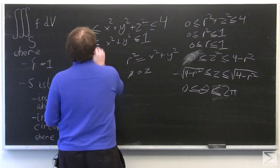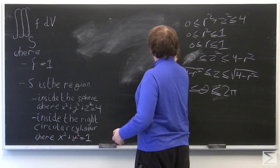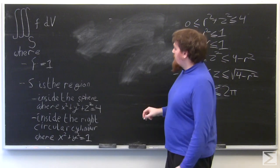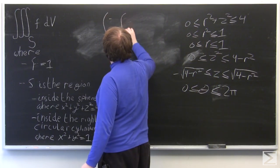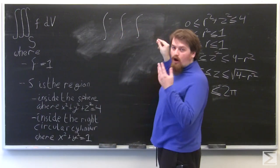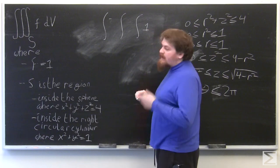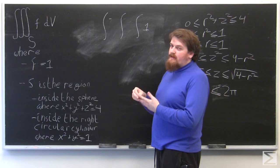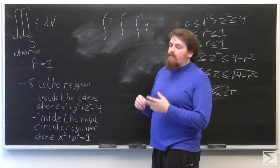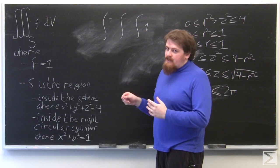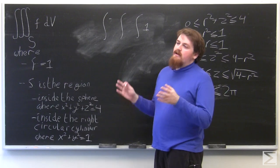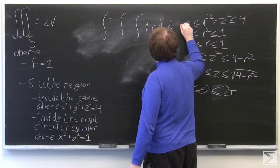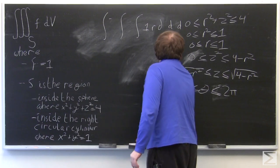Now we can start setting up the triple integral. There are going to be three integrals, and our function is 1. In cylindrical coordinates, the volume element instead of being dx dy dz is r dr dθ dz, where the dr, dθ, and dz can be switched in order as desired. So the integrand is r times three separate differentials.